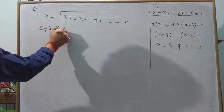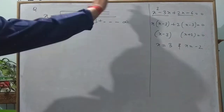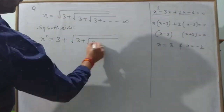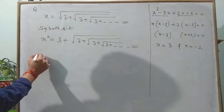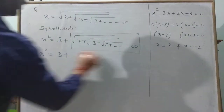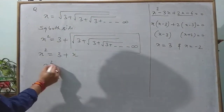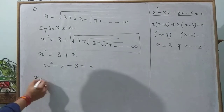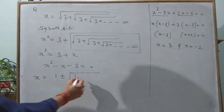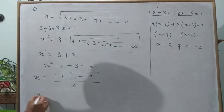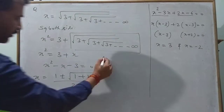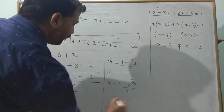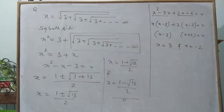In the same manner, squaring both sides gives x² = 3 + √(3 + √3...) till infinity, so x² = 3 + x. Therefore x² − x − 3 = 0. This cannot be factorized, so we use the quadratic formula: x = (1 ± √13) / 2, giving x = (1 + √13)/2 and x = (1 − √13)/2.